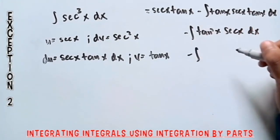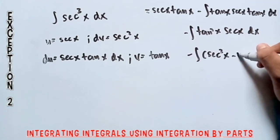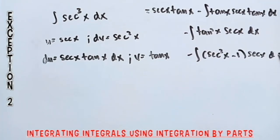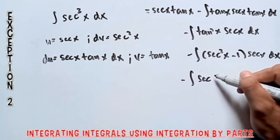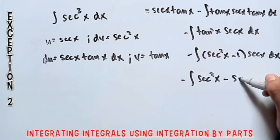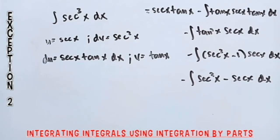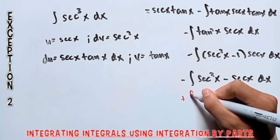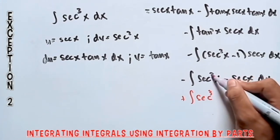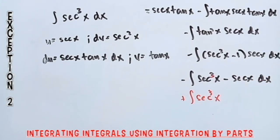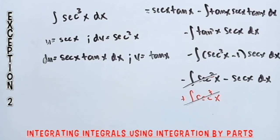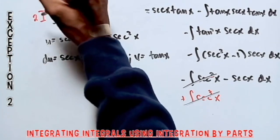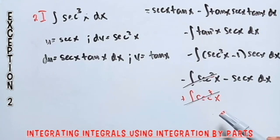We can use the identity for tan squared x: tan squared x equals sec squared x minus 1. So this becomes negative integral of the quantity sec squared x minus 1 times sec x dx. Distributing sec x, this equals negative integral of sec cubed x minus sec x dx. Notice that the integral of sec cubed x repeats! So let's add the integral of sec cubed x to both sides, which cancels the negative integral of sec cubed x, giving 2 times the integral of sec cubed x.